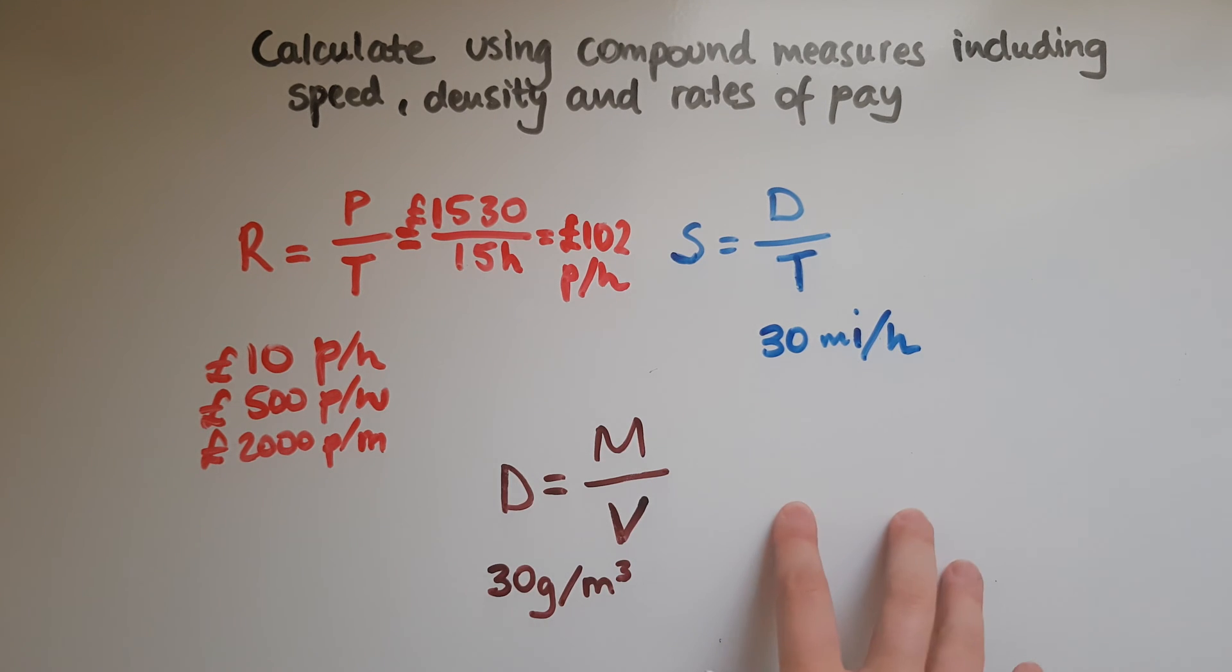When it comes to speed, the working out is very similar to the rates of pay. When you ask somebody what speed they're travelling at, or when you look at speed limits, you get something like 30 miles per hour. That means that within an hour they're going to travel 30 miles, if they travel at a constant speed.